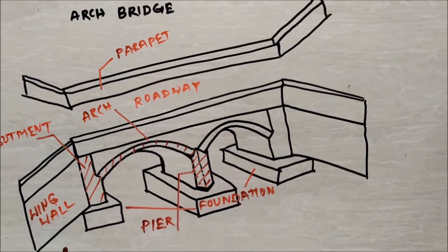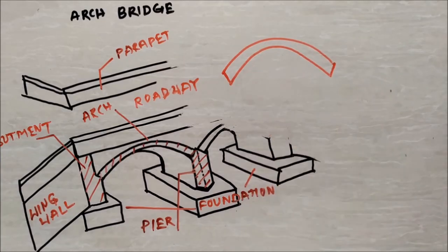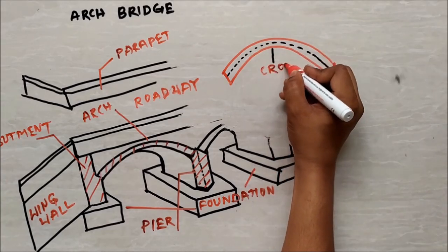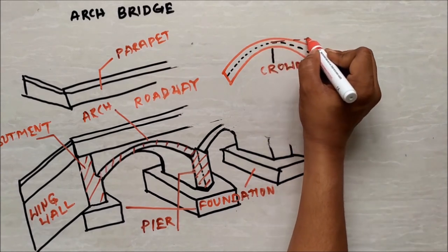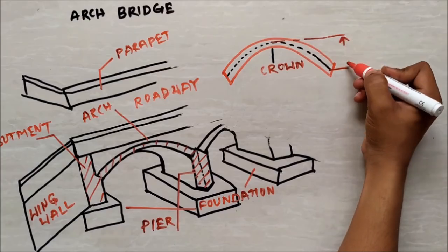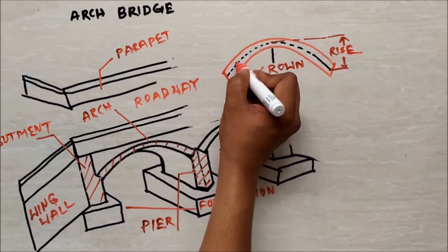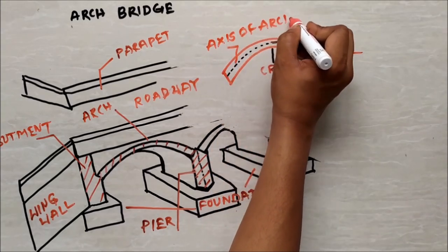We will discuss it in detail. The topmost part of the arch is the crown. This is the center of the keystone, and this bottom one is spring line. The distance between them is called a rise, and this is the axis of arch in the shape of a parabola whose axis is vertically downwards.